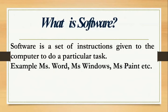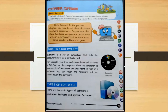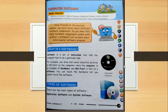So what is software? Software is a set of instructions given to the computer to do a particular task. For example, MS Word, MS Windows, MS Paint, etc. Children, let us start reading the chapter now. Chapter number 3, Computer Software. In the previous chapter, you have learnt about different hardware components. Do you know that these hardware components cannot work without software? Let us learn about some popular software programs.